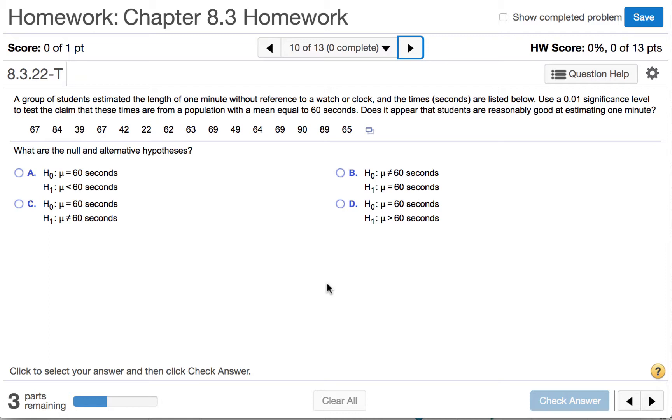The question asks us to determine whether or not these times come from a population with a mean that is equal to 60 seconds. So our null and alternative hypotheses will be that the mean is equal to 60 seconds and the mean is not equal to 60 seconds.